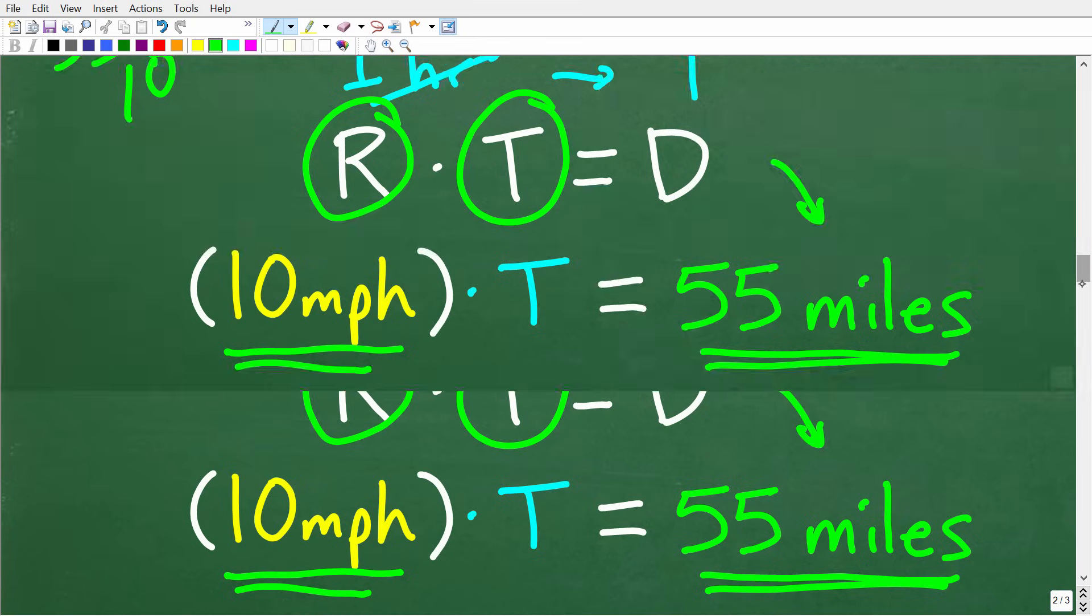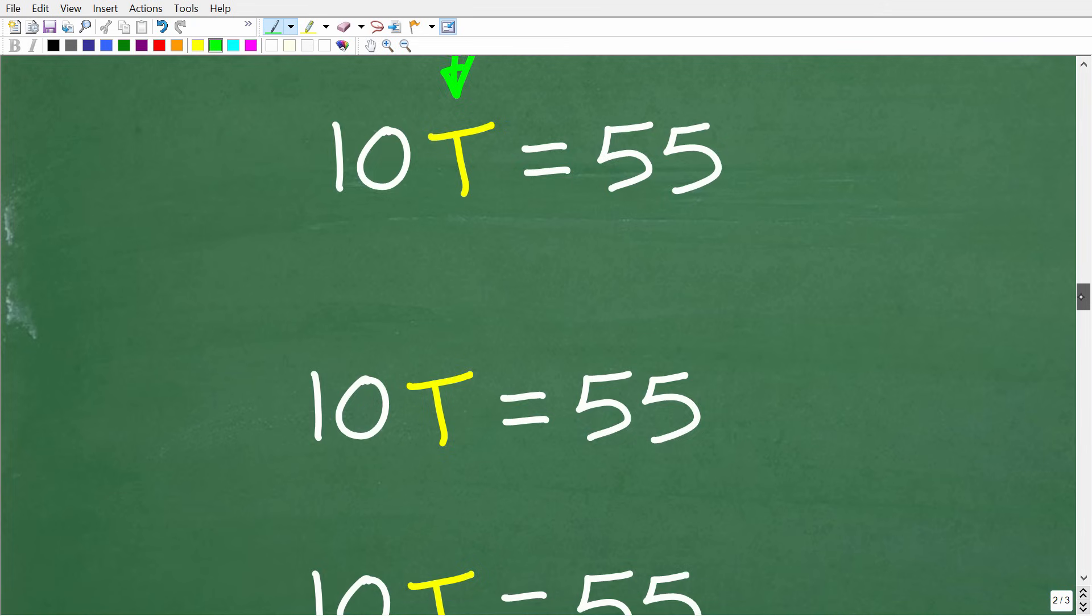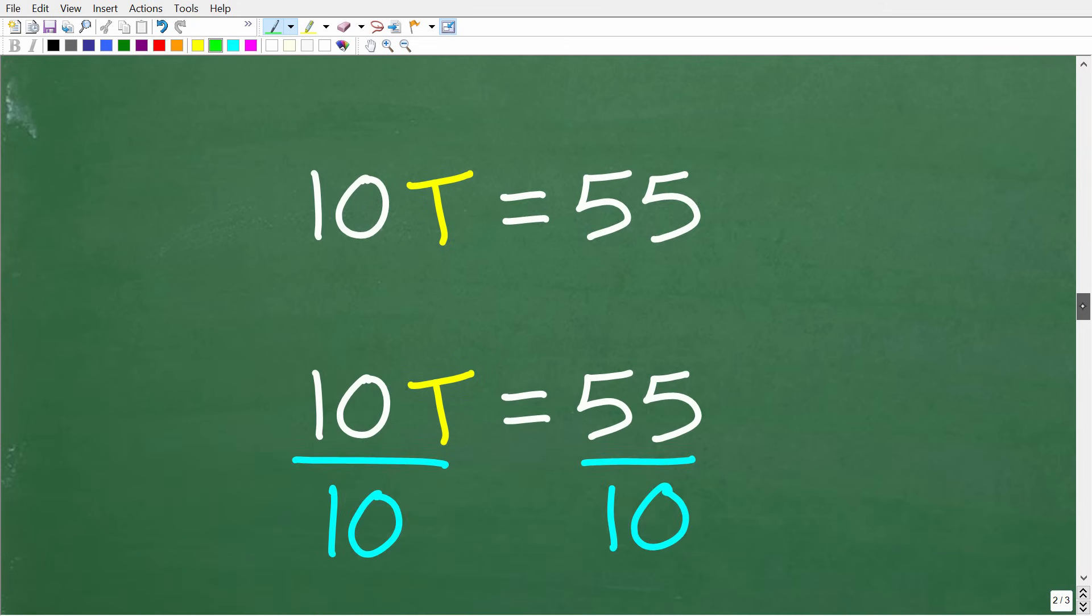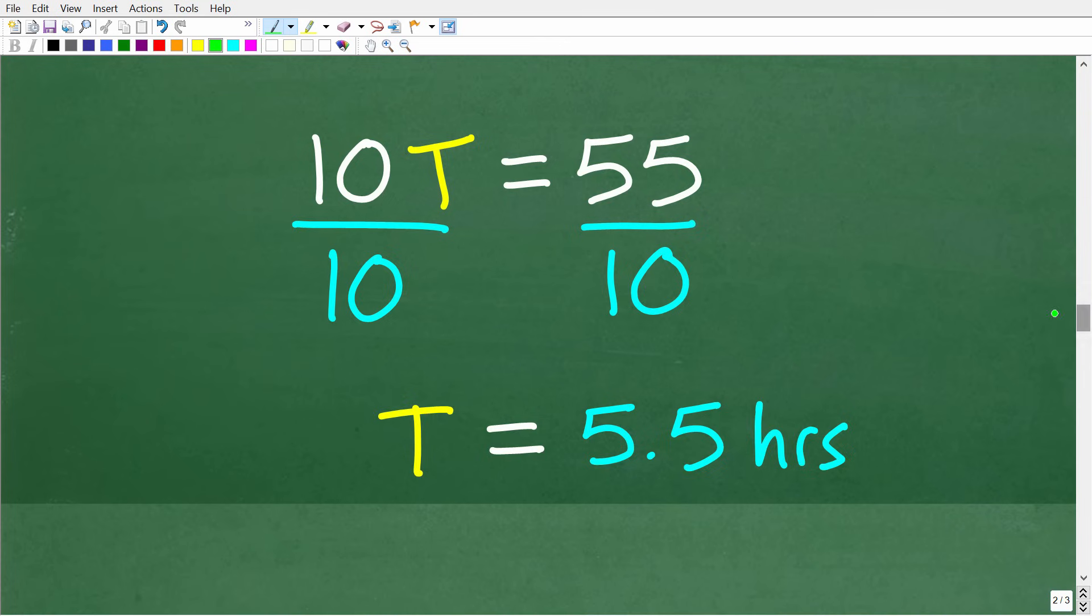Okay, so this is a very simple algebra equation, and it's just going to be 10 times T is equal to 55. And again, we're trying to solve for T. Okay, so in algebra, to solve this simple equation, all we have to do is divide both sides of the equation by 10. So 10 divided by 10 is 1 or 1T or T. And 55 divided by 10, of course, is 5.5, which is the answer.